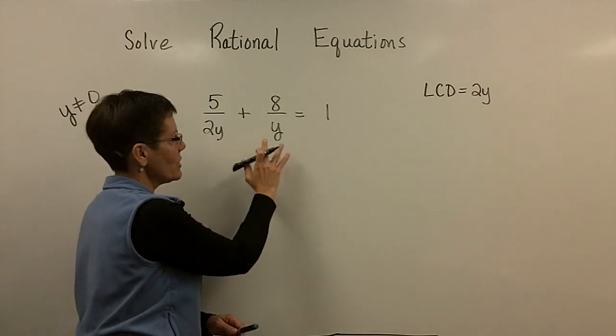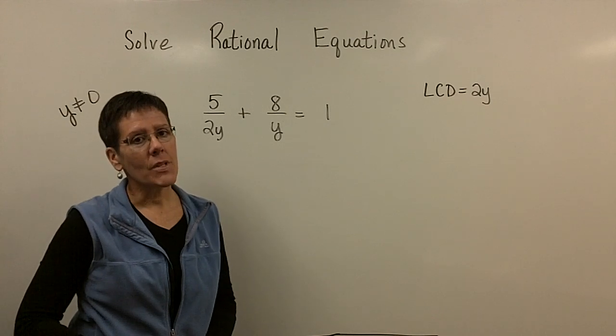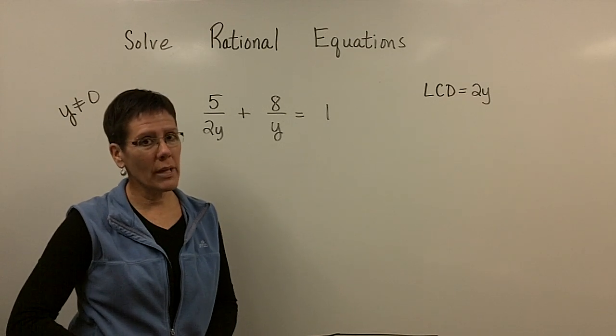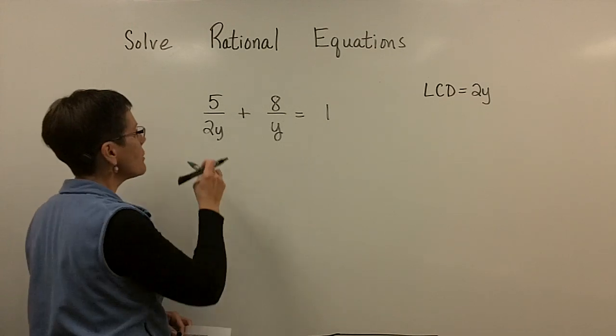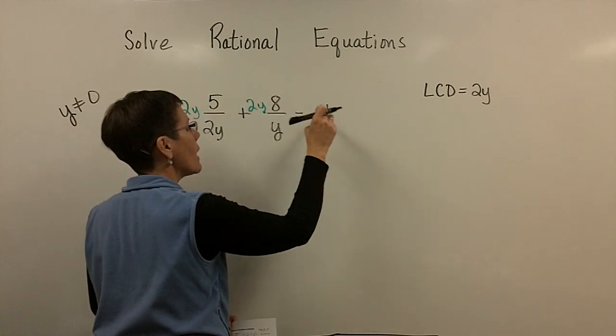And you're not trying to get those common denominators. You're not trying to get a 2 in this denominator. You're trying to remove the denominators. So you multiply by the whole LCD. You multiply every term by the 2y.